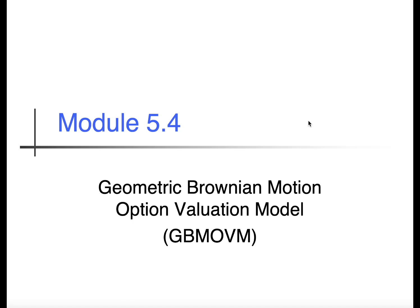In module 5.4 we're going to be going over the standard orthodox Black-Scholes-Merton option valuation model. I'm going to refer to it as a geometric Brownian motion model, or geometric Brownian motion option valuation model, because I'm going to contrast it in module 5.5 with the arithmetic Brownian motion option valuation model.